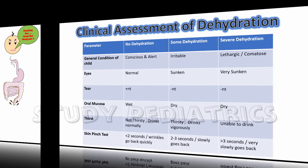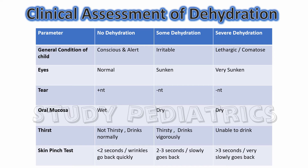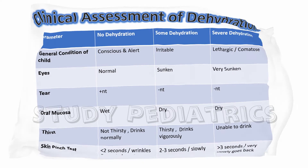Now let's dive into dehydration and its clinical aspects. We can divide dehydration into no dehydration, some dehydration, and severe dehydration. This table is very important because our whole treatment will be guided by it. We will look at six parameters related to this — the table may look cumbersome, but let's study it through diagrams.